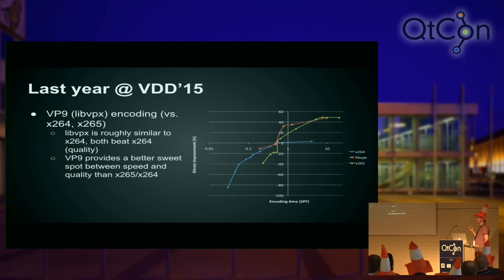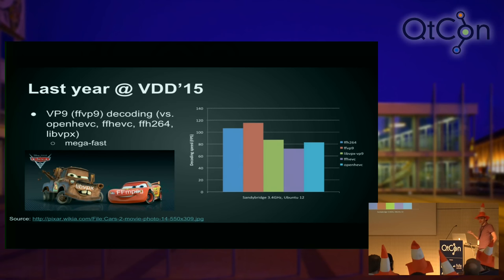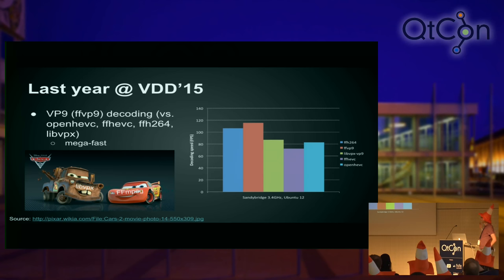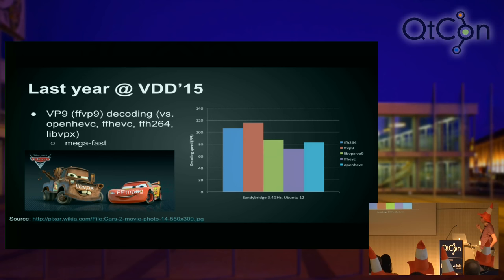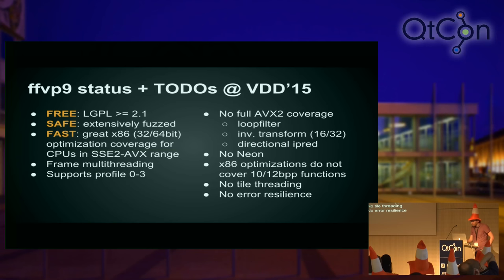Libvpx was slightly better, so in terms of bang for your CPU buck, VP9 is a pretty good choice. The second thing I showed last year was VP9 decoding — the decoder that me and Clement wrote as part of FFmpeg, called FFP9. It was a really fast decoder. Doing same-quality file comparisons with other codecs like H.264 or HEVC, this decoder gave much faster frame output, and compared to libvpx it was about 20 to 30 percent faster.